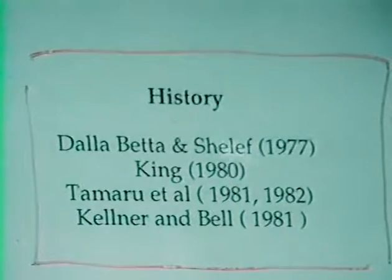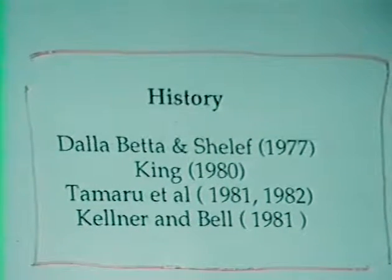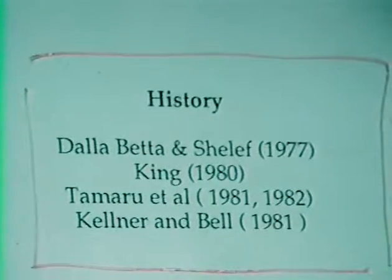Alkyl groups on ruthenium were first seen by Dalla Betta and Shelef in 1977. They basically didn't know whether the alkyl groups were on the support or on the metal surface itself and they didn't make that interpretation. King in 1980 had some very good IR spectra. I was looking at them a couple days ago, the quality was almost as good as ours. He basically attributed the alkyl groups seen in the infrared to products that have been reabsorbed on the support. Similarly, Professor Bell and his co-workers have done quite a bit of work on alkyl groups growing on ruthenium.